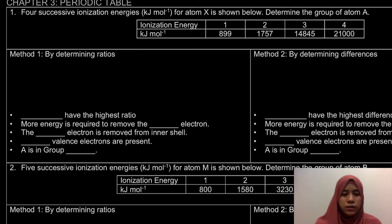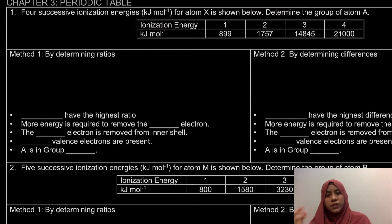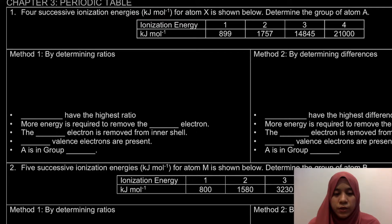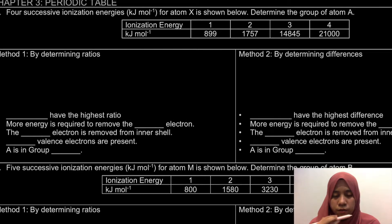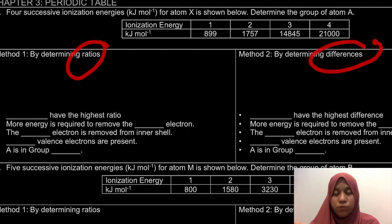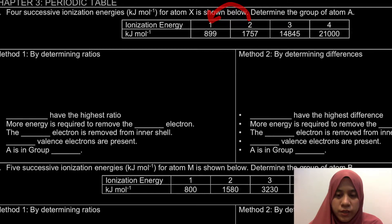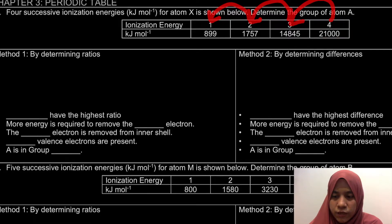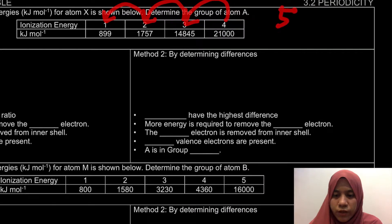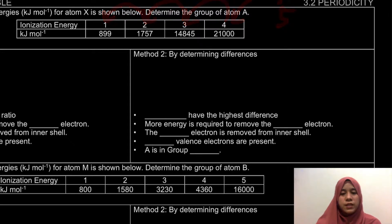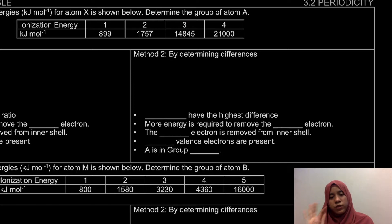The question gives us the four successive ionization energy values for atom X and asks us to determine the group of atom A. Remember, we can only determine the group for groups 1, 2, and 13 to 18. There are two methods: ratio or differences. For the ratio method, I'm going to find IE2 divided by IE1, then IE3 divided by IE2, then IE4 divided by IE3. Since we only have four values, we find three ratios.